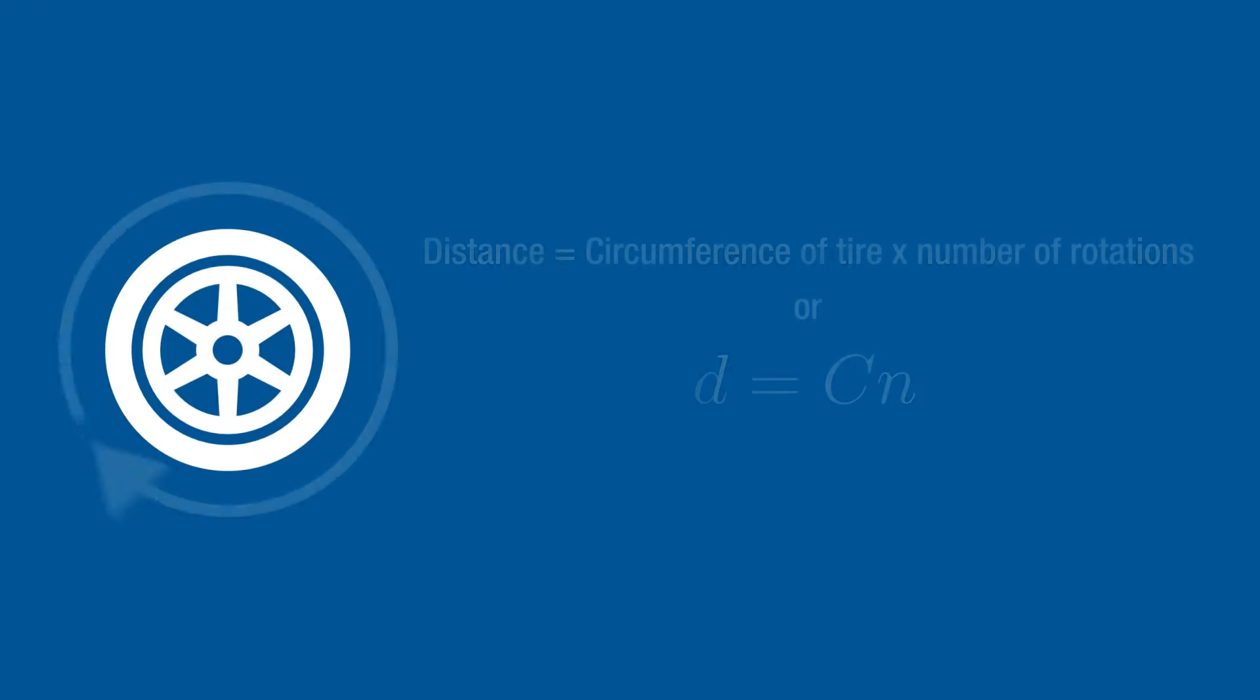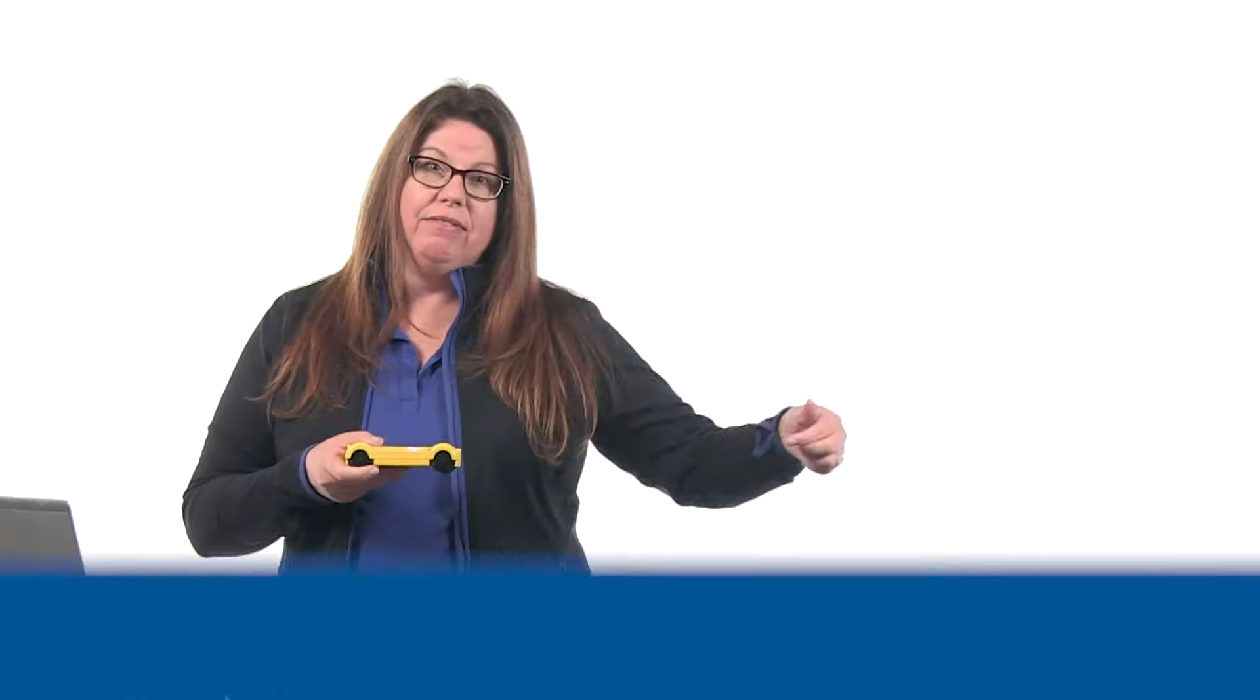I gave you a lot of information. Essentially what we're saying is an odometer works by counting a full rotation of the tire and that's how it's calculating distance. It's taking the circumference of your tire and how many rotations you are traveling.